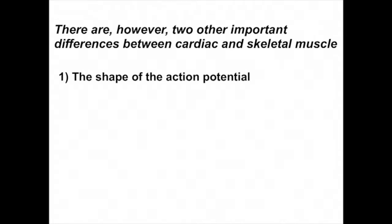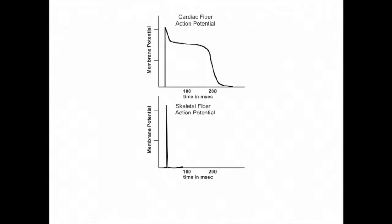There are, however, two other important differences between cardiac and skeletal muscle. The first is the shape of the action potential. The action potentials generated by cardiac muscle fibers are much longer than those generated by skeletal muscle fibers. In skeletal muscle, the action potentials are very short, on the order of about 1 millisecond. Cardiac muscle fibers, in contrast, generate action potentials that last about 200 milliseconds. The long duration of the cardiac action potential ensures that the fibers will not twitch, but rather contract strongly and remain contracted for a sufficient period to expel blood from the atria into the ventricles and from the ventricles into the lungs and throughout the body.